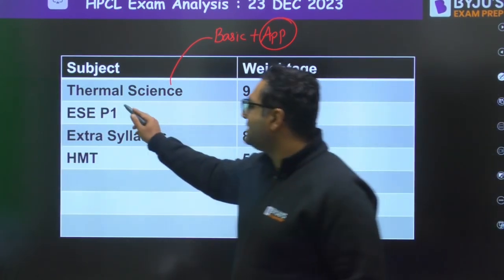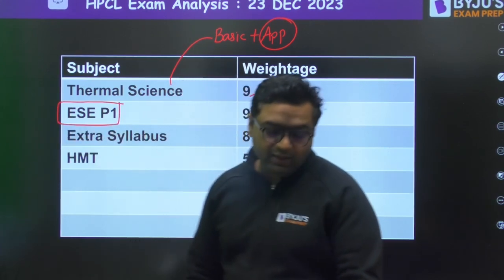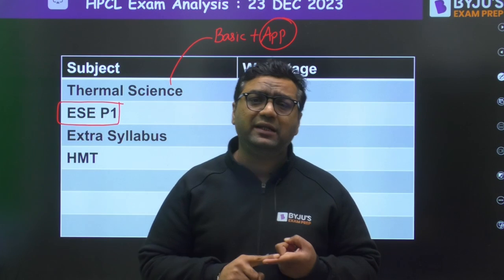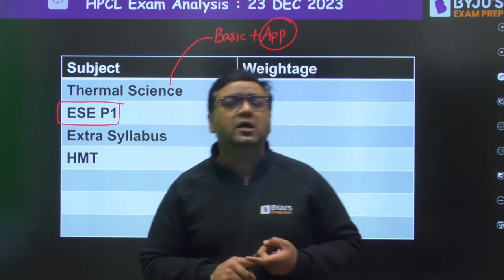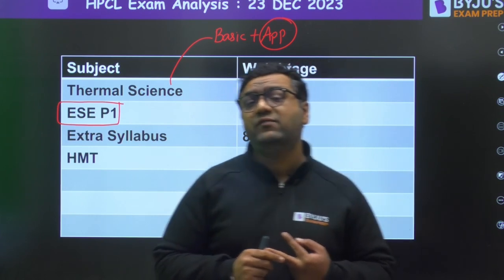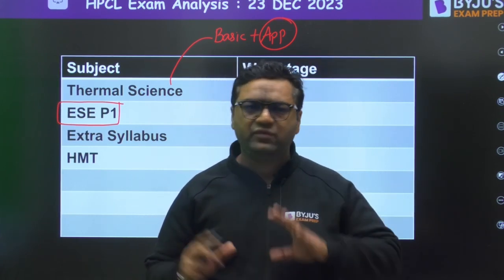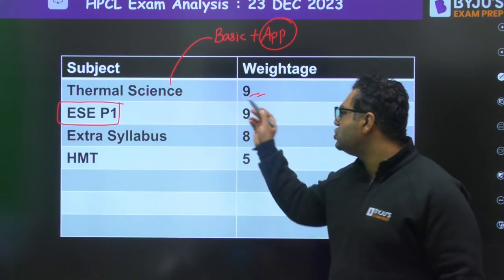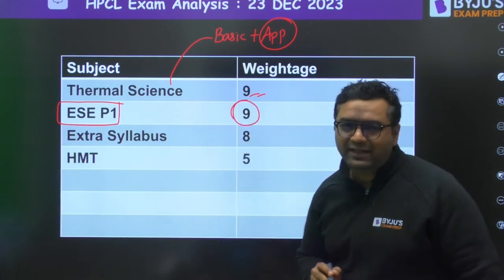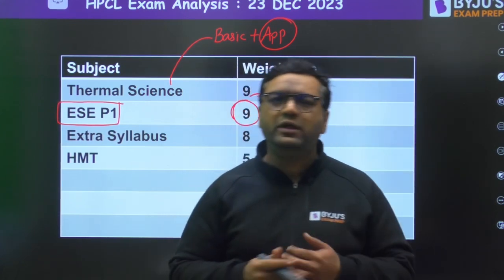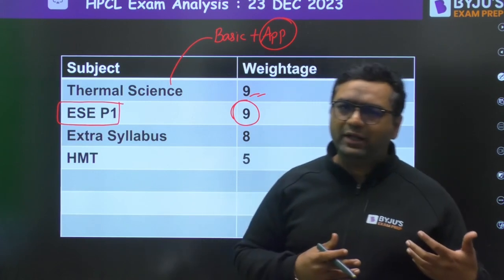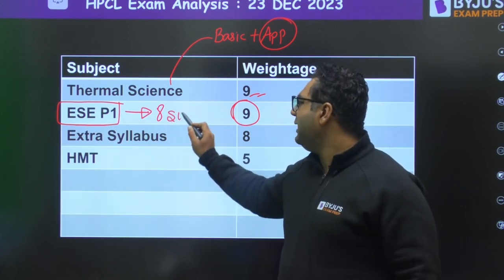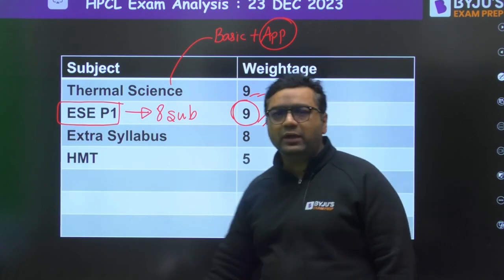The Thermal Sciences application includes Refrigeration, IC Engines, and Power Plant Engineering, with around nine questions total. There is also ESC Paper 1 in the new syllabus, which includes topics like basics of project management, basics of material science, information and communication technology, ethics, design drawing and safety, energy and environment, and statistical quality practices. From all these areas, one to two questions each were taken, totaling nine questions from eight subjects including current affairs and math safety.